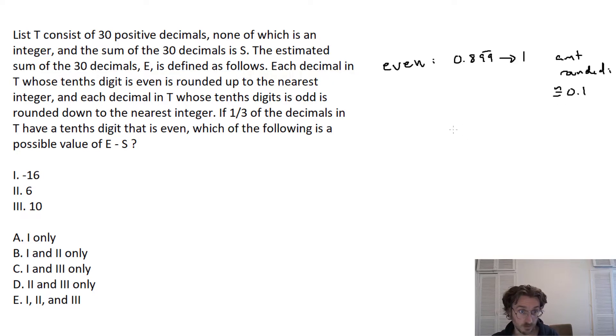And then the minimum number that you could get that has an even tenths digit... So what that means, essentially, is for the evens, you've got 0.1 as your amount of rounding per number up to 1, potentially.